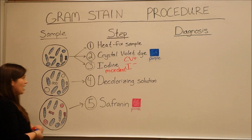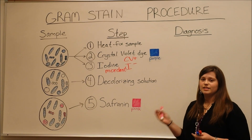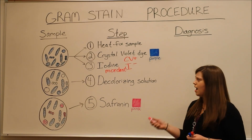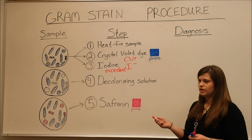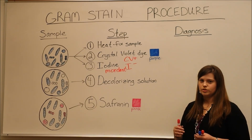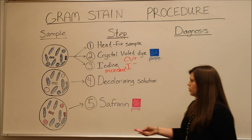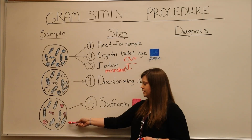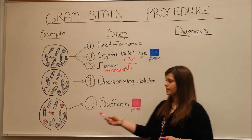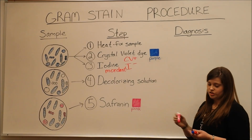At the end of a procedure like this, you can see how it's fast, it's inexpensive, and it's relatively simple. One of the reasons it's so useful in a laboratory or hospital setting is it helps to give what's called a presumptive diagnosis. For example, we see that the majority of cells in this sample are gram-positive rods — purple, gram-positive rod-shaped bacteria.